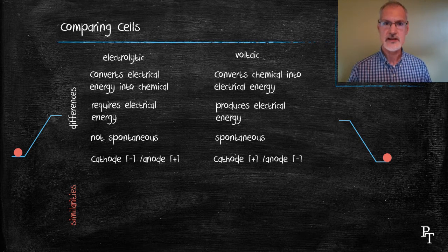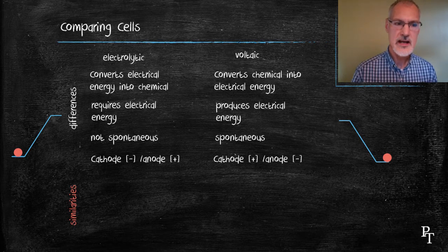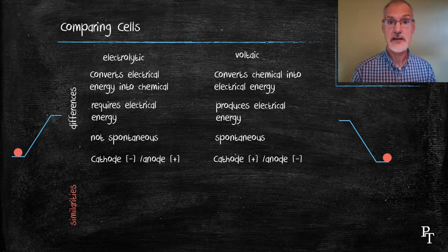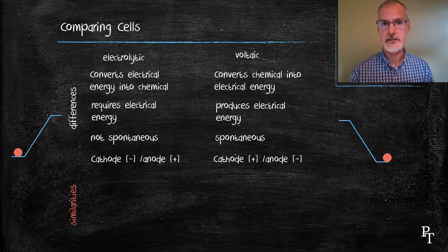Cathode and anode also have changed their identities. The cathode is negative in the electrolytic cell, whereas the cathode is positive in the voltaic cell and vice versa.